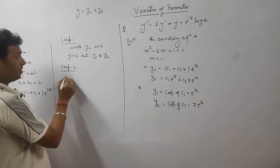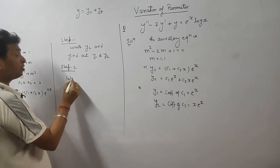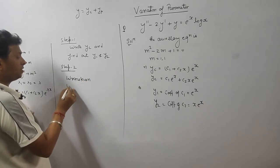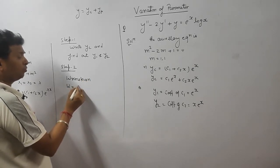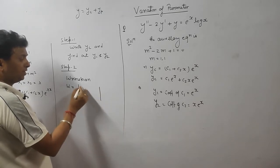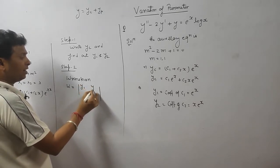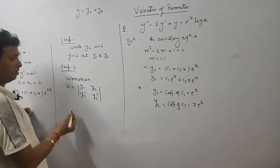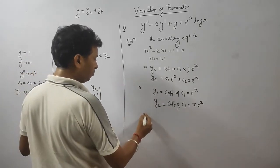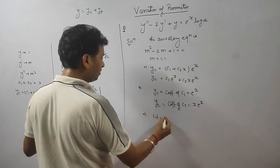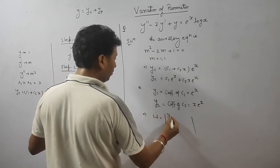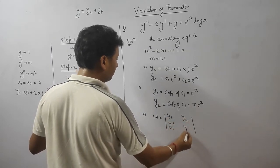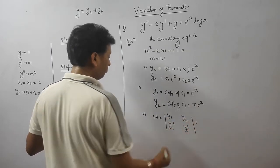Once you know y1 and y2, your next step is to calculate the Wronskian. The Wronskian W is equal to the determinant with entries y1, y2 in the first row and y1 dash, y2 dash in the second row. So set up the determinant with those values.